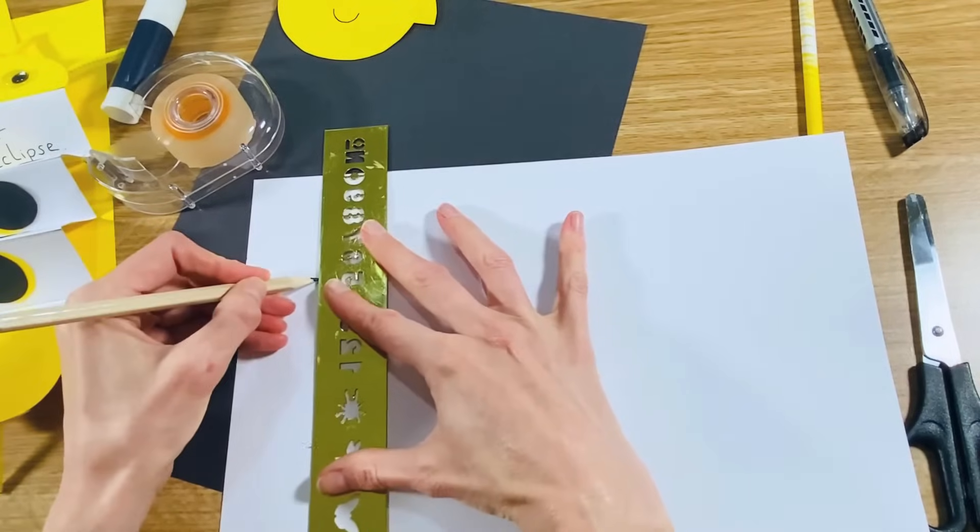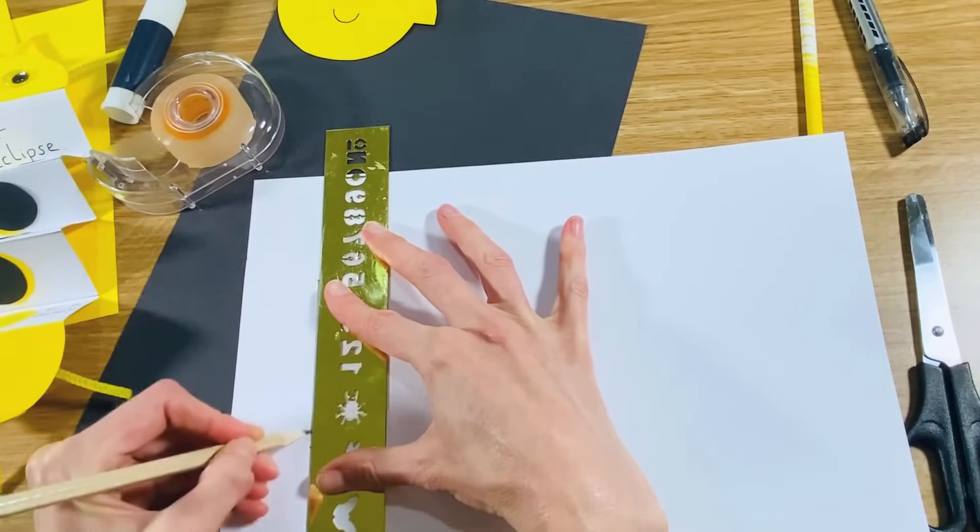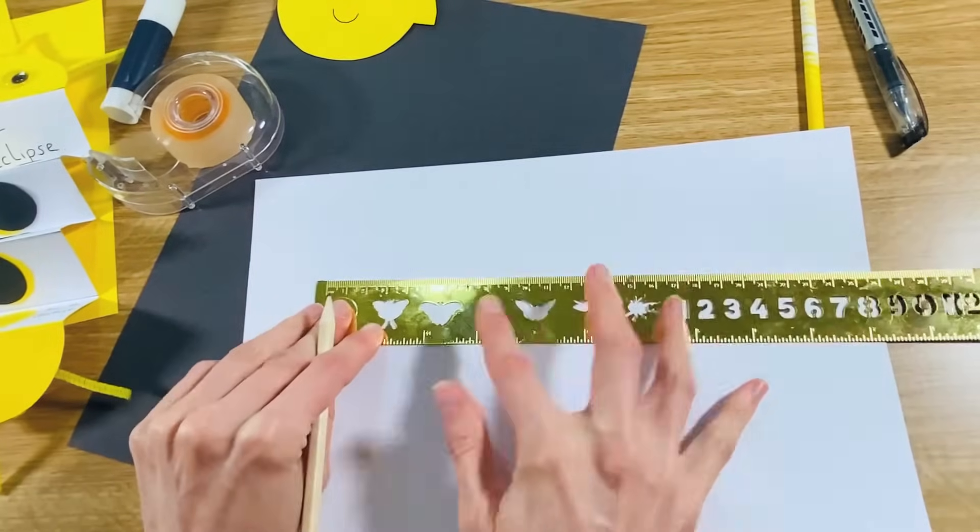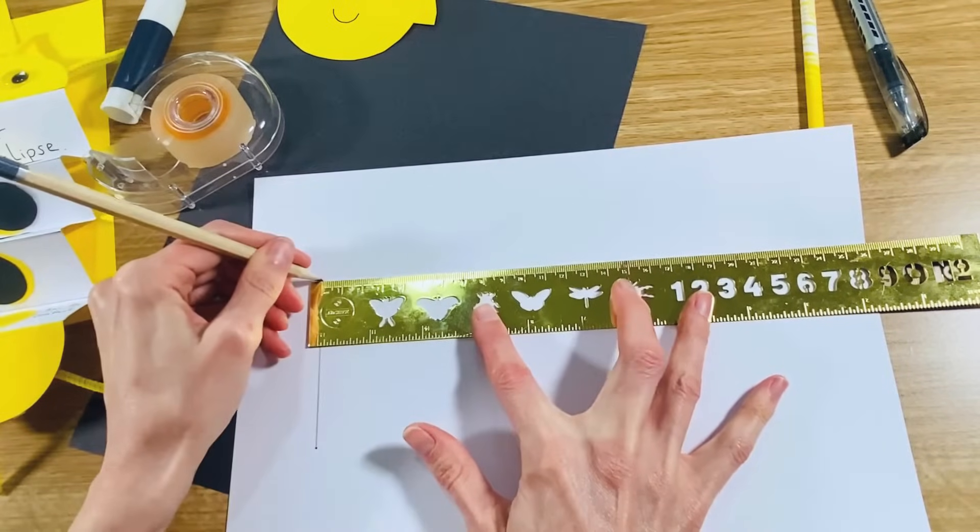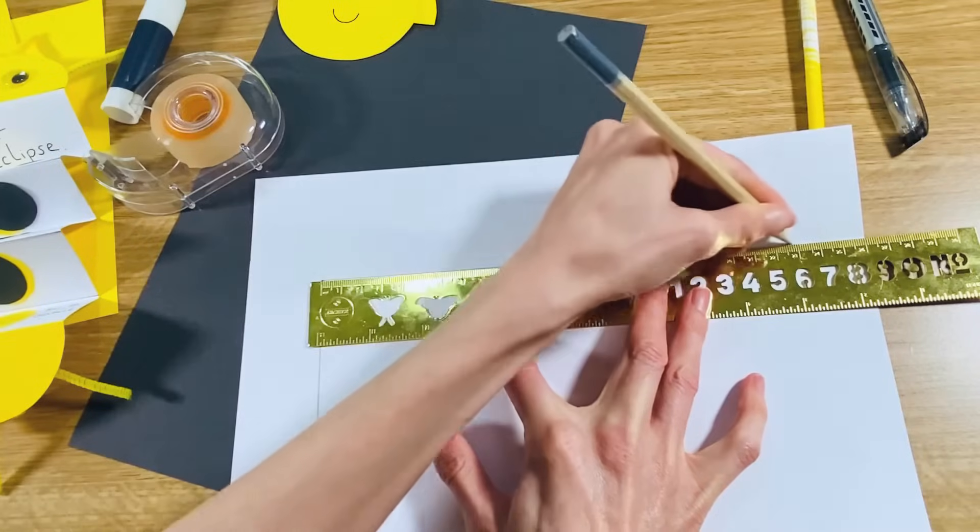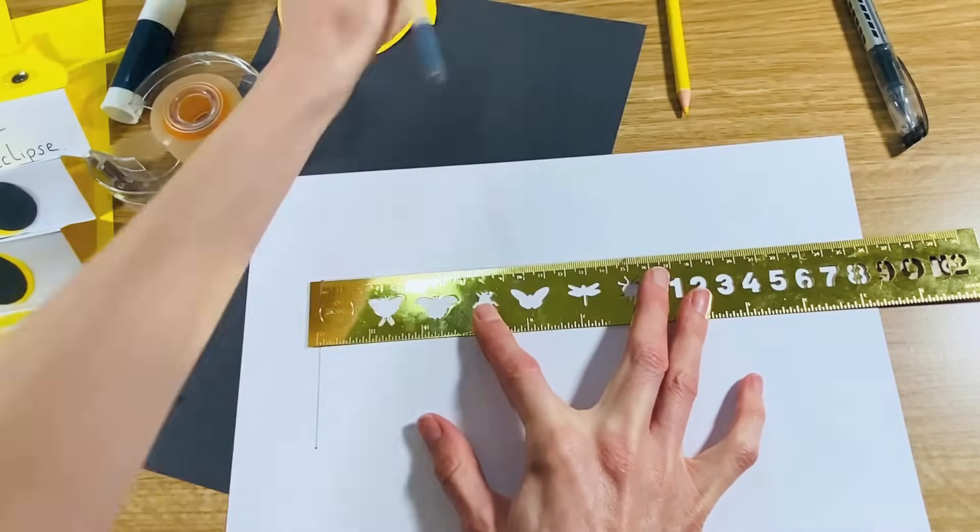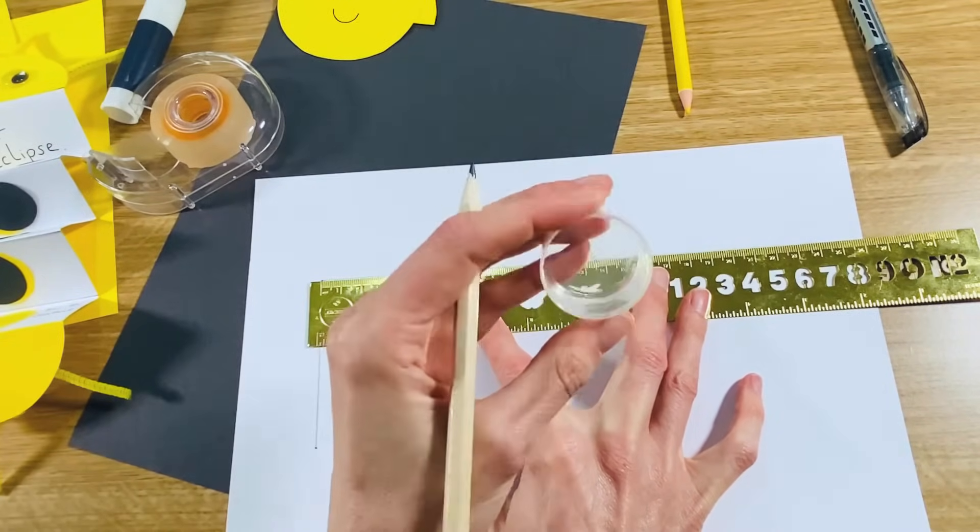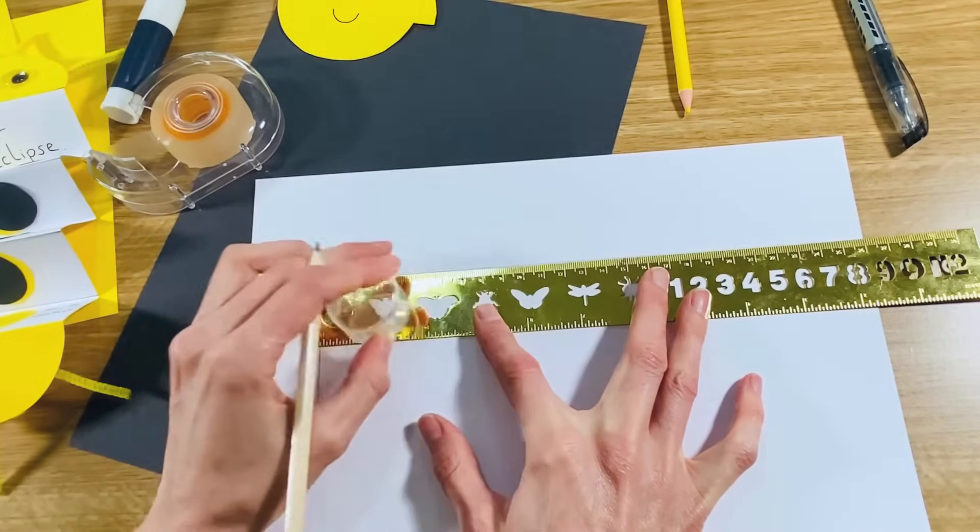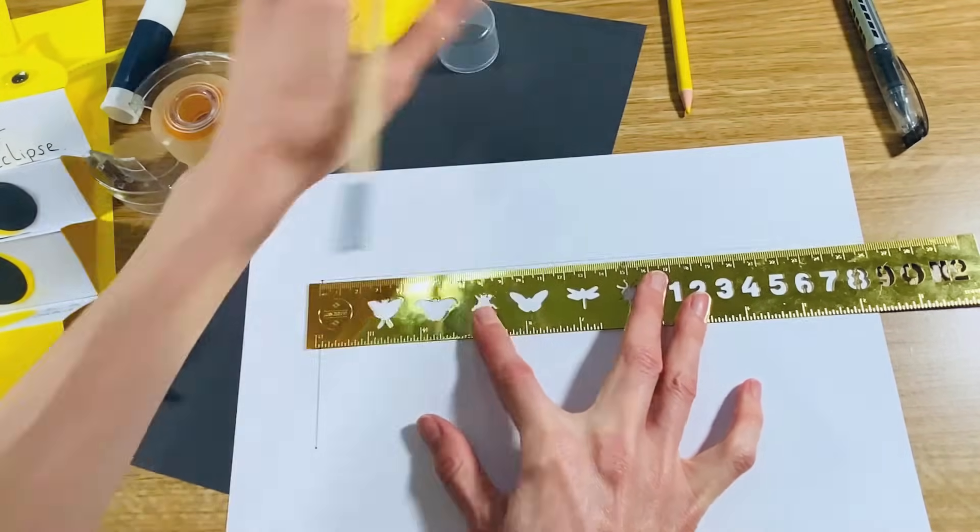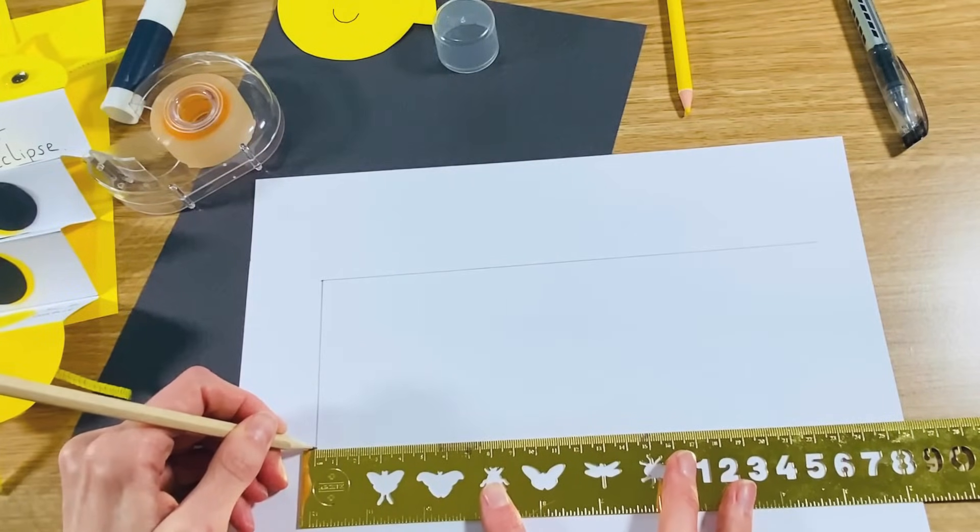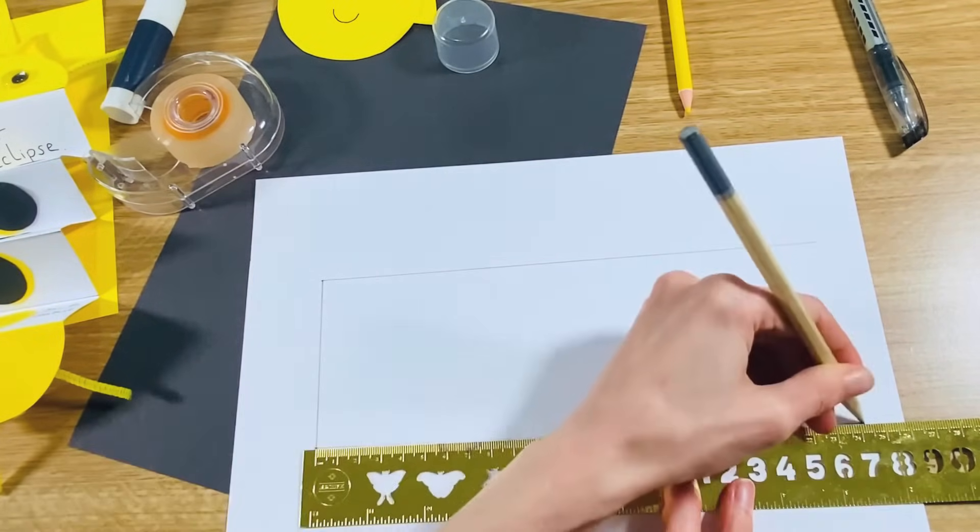So I'm going to make my rectangle 24 centimeters across, and the reason I'm going to do 24 centimeters is because I'm going to need to fit in these circle shapes. So I know that the ones I've chosen are three centimeters across, so I'm going to want each section to be four centimeters across to accommodate that. So it depends on the size of your small circle really.